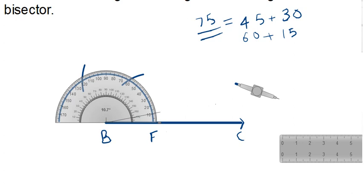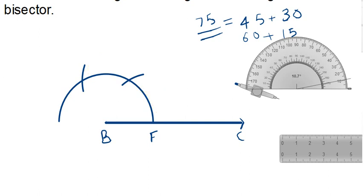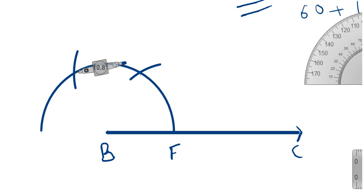So 60 degrees is already constructed. This remaining portion between the two arcs is 30 degrees, and out of that 30 we need to take 15. So we will bisect this 30-degree part. We take the compass, keep it at one point, open it more than half, and draw an arc.